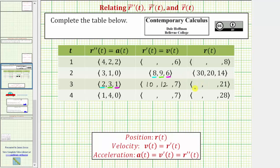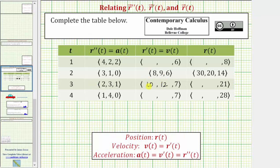And now let's find the position vector at t equals three seconds. We will focus on the velocity over this time period, which is 10 meters per second in the x direction, 12 meters per second in the y direction, and seven meters per second in the z direction. The starting position is the position at t equals two seconds, which is 30 meters in the x direction. The x position starts at 30 meters, and for the next one second the velocity in the x direction is 10 meters per second, which increases the position by 10. 30 plus 10 is 40. At t equals three seconds, the position in the x direction is 40 meters.